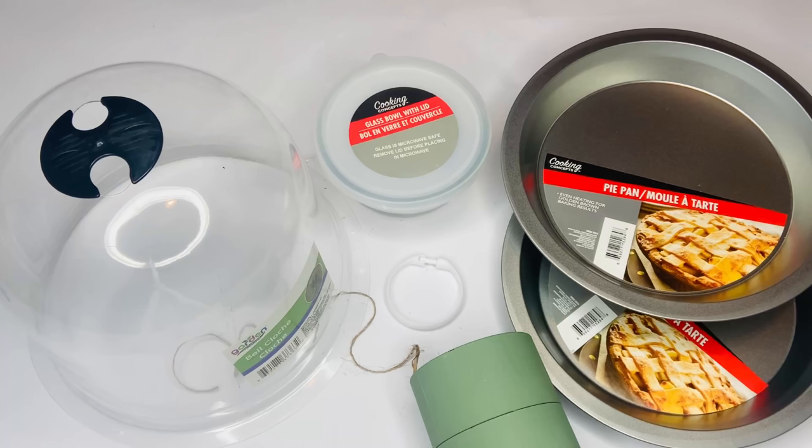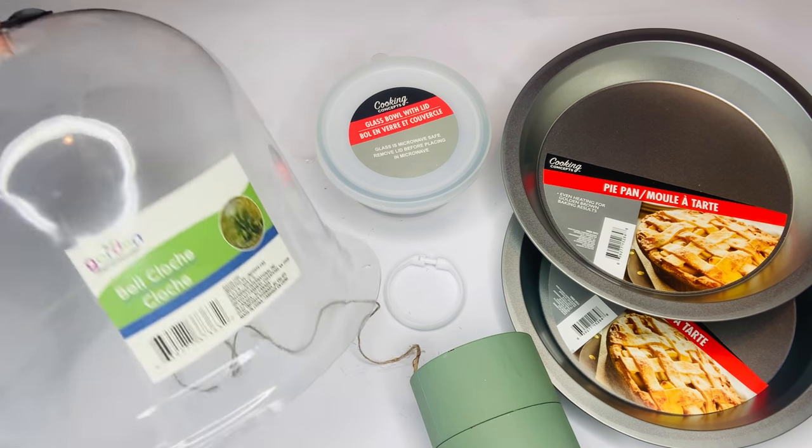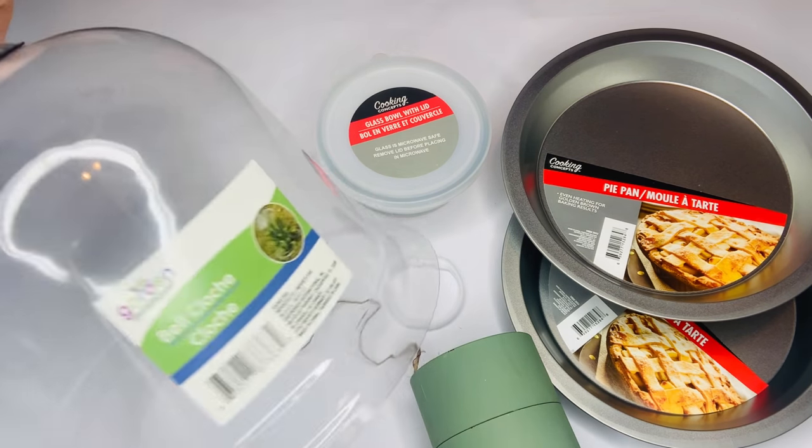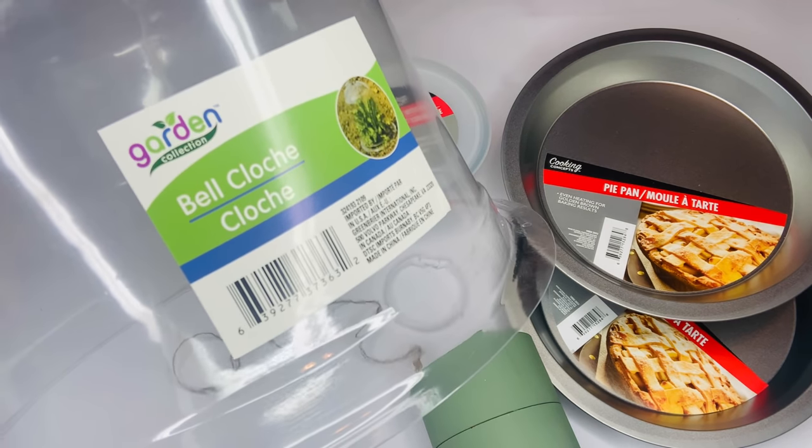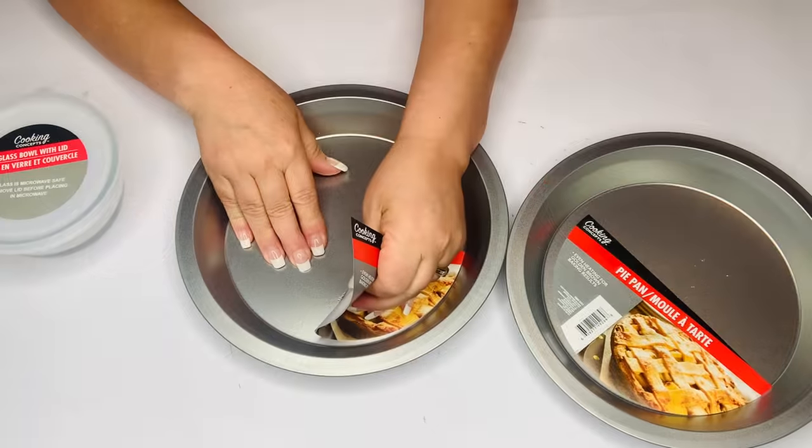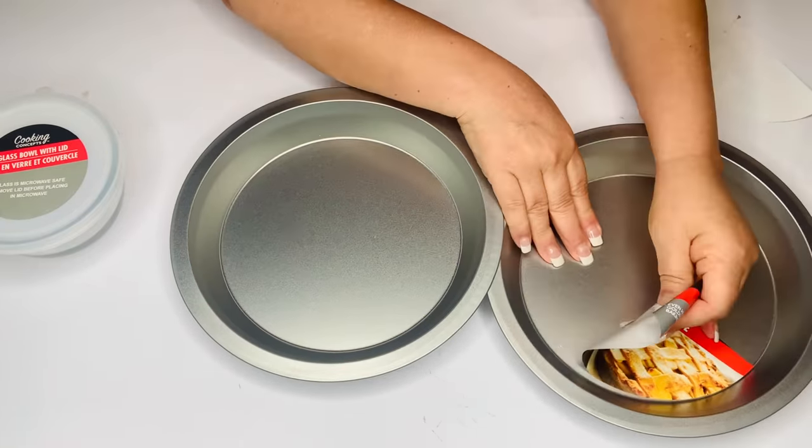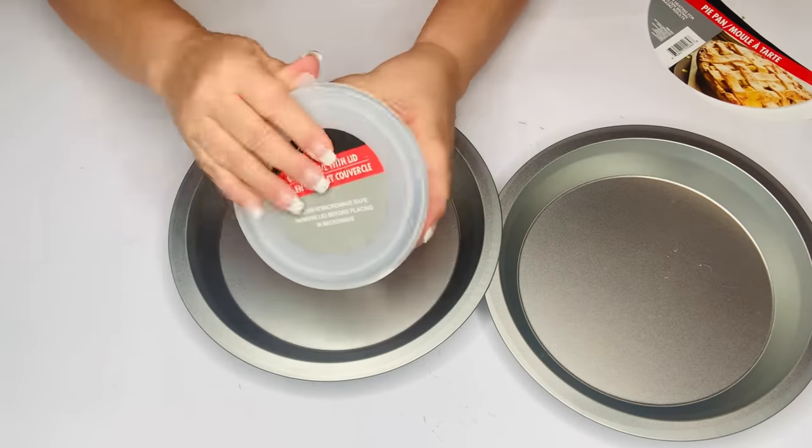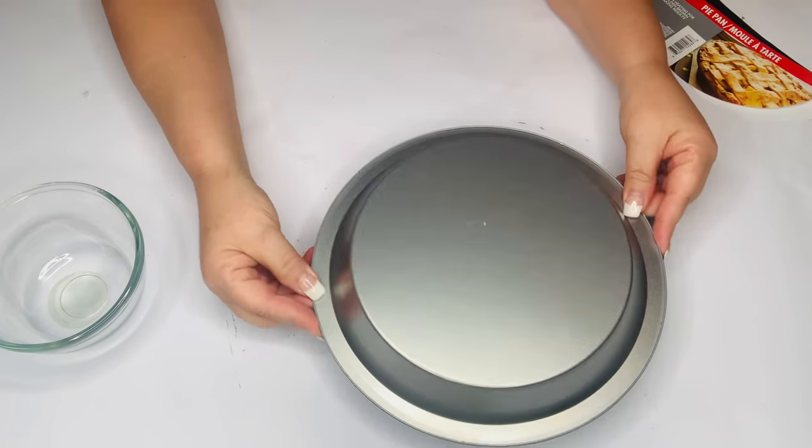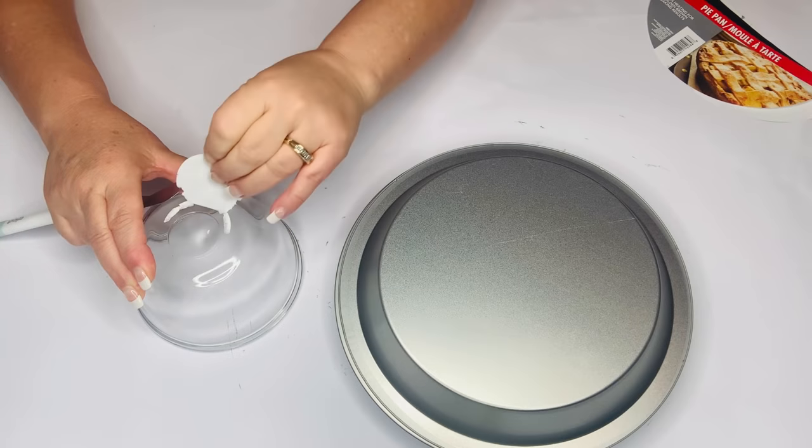For our first Dollar Tree DIY, I'm using two pie pans, a glass bowl, a shower curtain ring, some jute twine, and this plastic bell cloche I found in the garden area. It's super flimsy but will work perfectly. As always, we'll start by getting everything ready by taking all the stickers off. This glass bowl has a lid that I'll be removing.